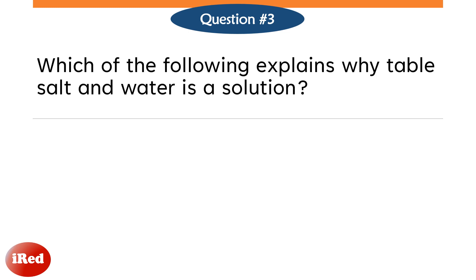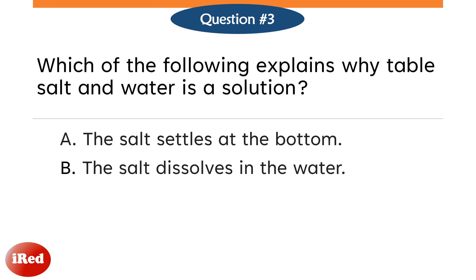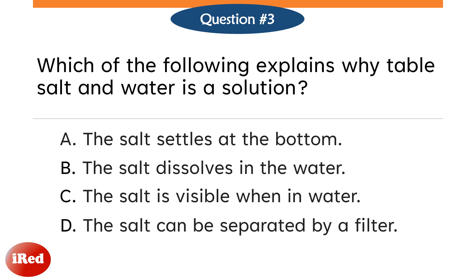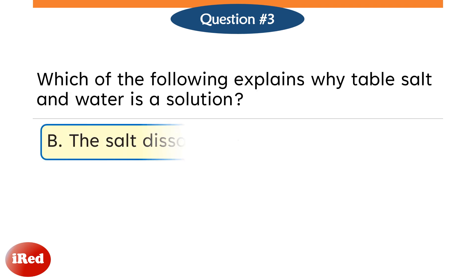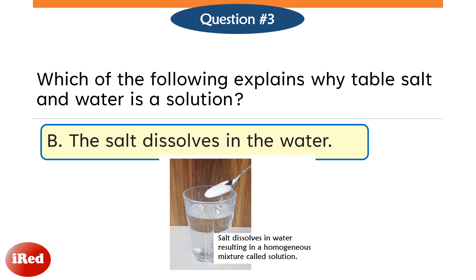Question number three. Which of the following explains why table salt and water is a solution? Letter A, the salt settles at the bottom. Letter B, the salt dissolves in the water. Letter C, the salt is visible when in water. Or Letter D, the salt can be separated by a filter. The correct answer is Letter B, the salt dissolves in the water. Salt dissolves in water, resulting in a homogeneous mixture called a solution.